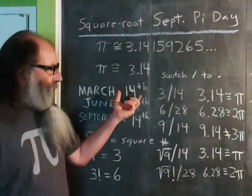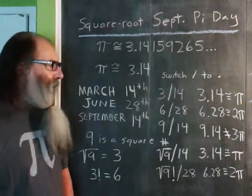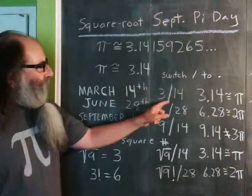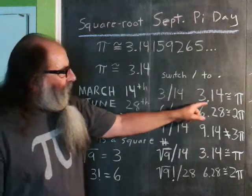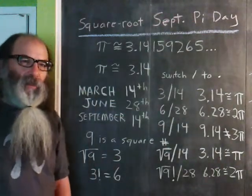Well, on March 14th, 3/14, a lot of people celebrate that day as pi day. Take the slash, convert it to a dot, you get 3.14, approximately pi.